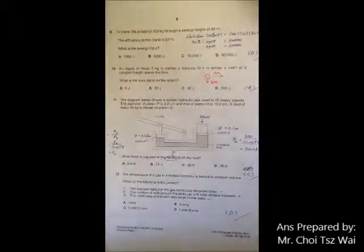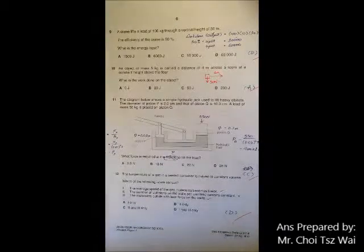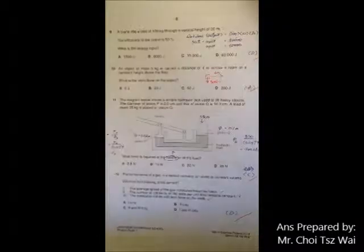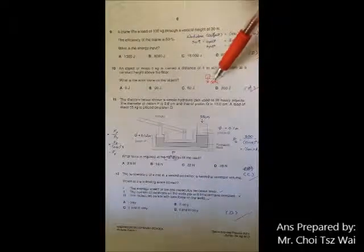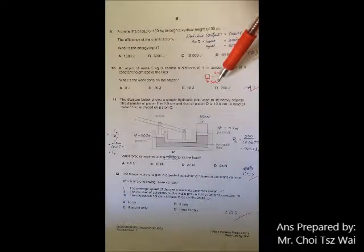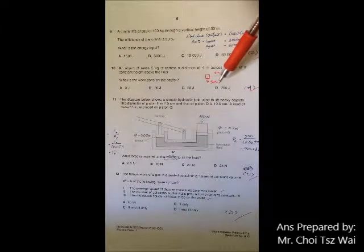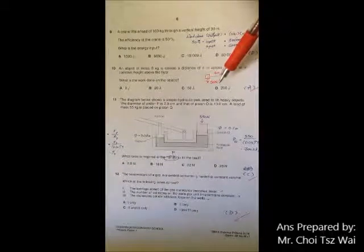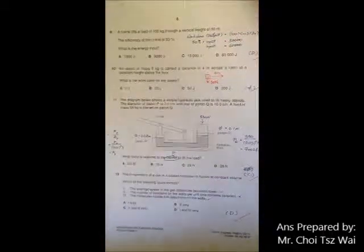So remember, when you are calculating work done, the distance factor that you choose has to be the same direction as your force factor. In this case the direction factor, which is the up and down motion, is zero, so therefore work done is zero.